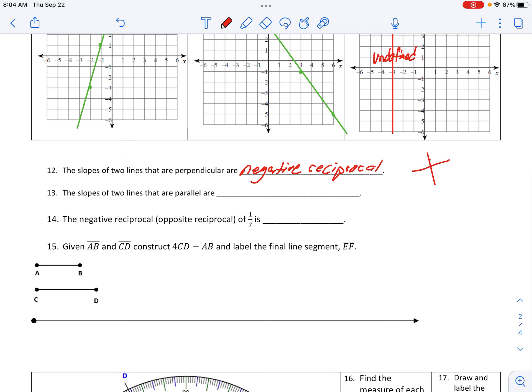Or you can say that perpendiculars could also be opposite reciprocals. Parallel lines always have the same slope.